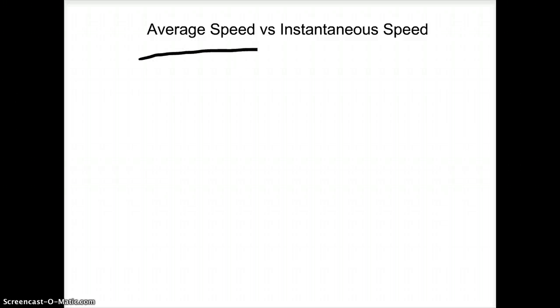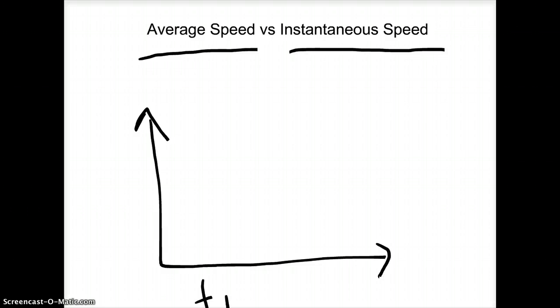Let's talk about average speed versus instantaneous speed. Let's take a look at a distance versus time graph. We have time on the x-axis and distance on the y-axis.